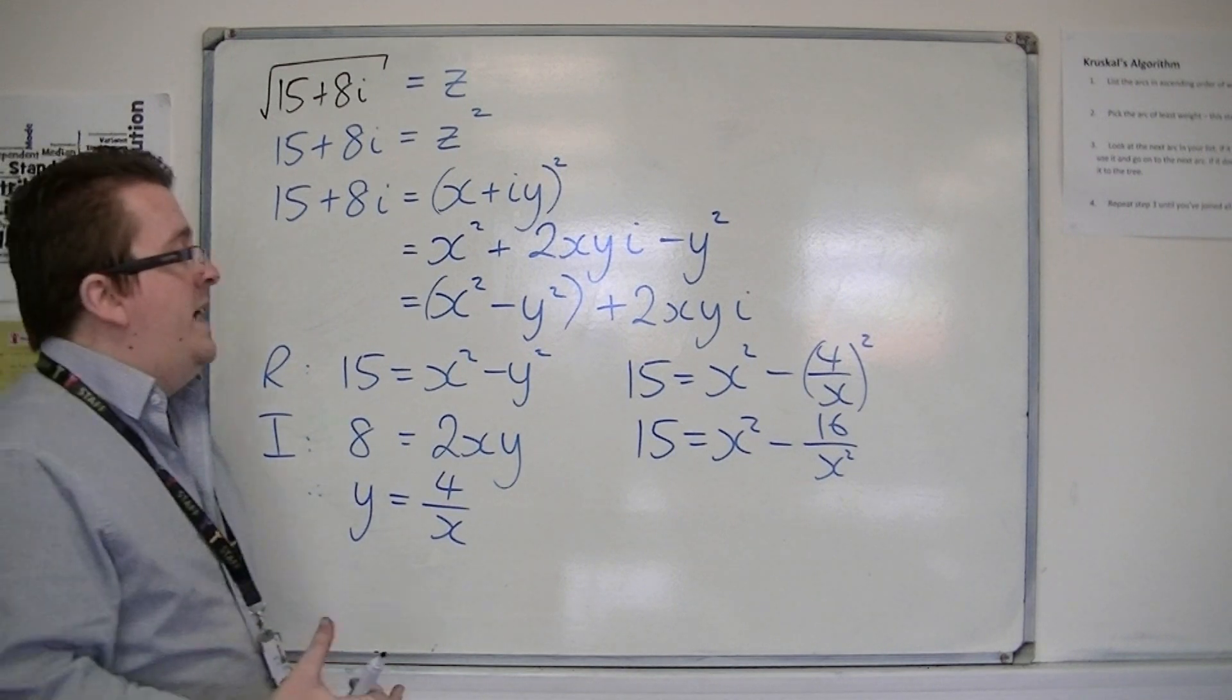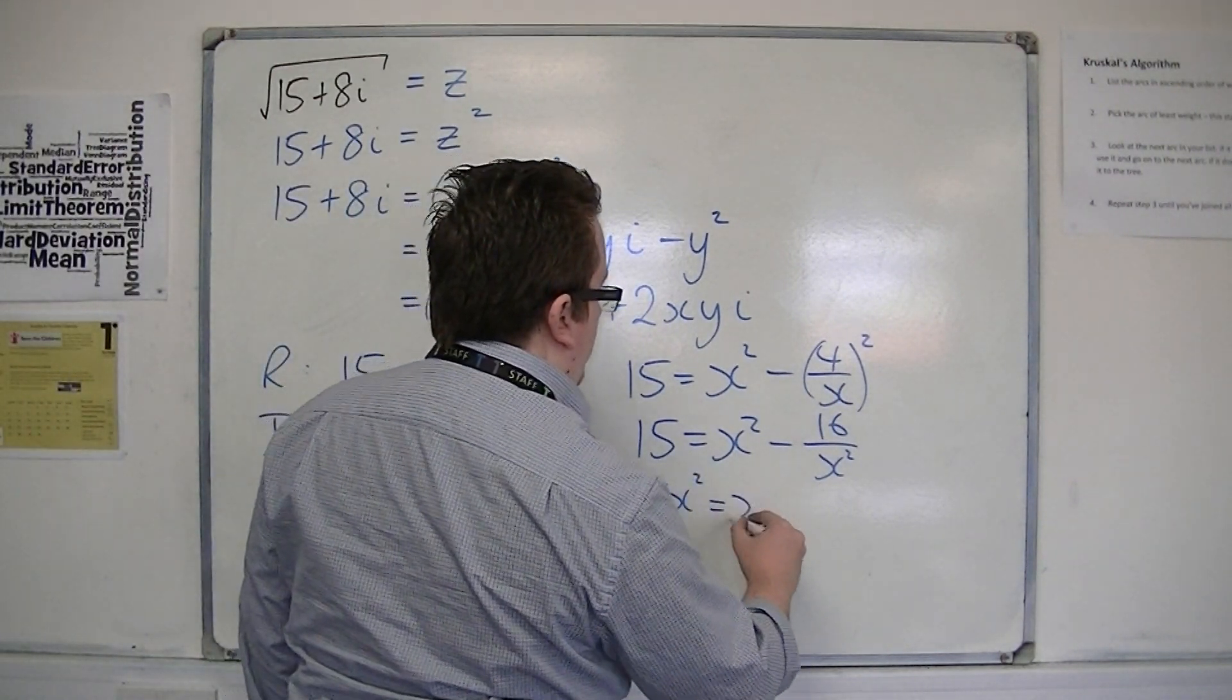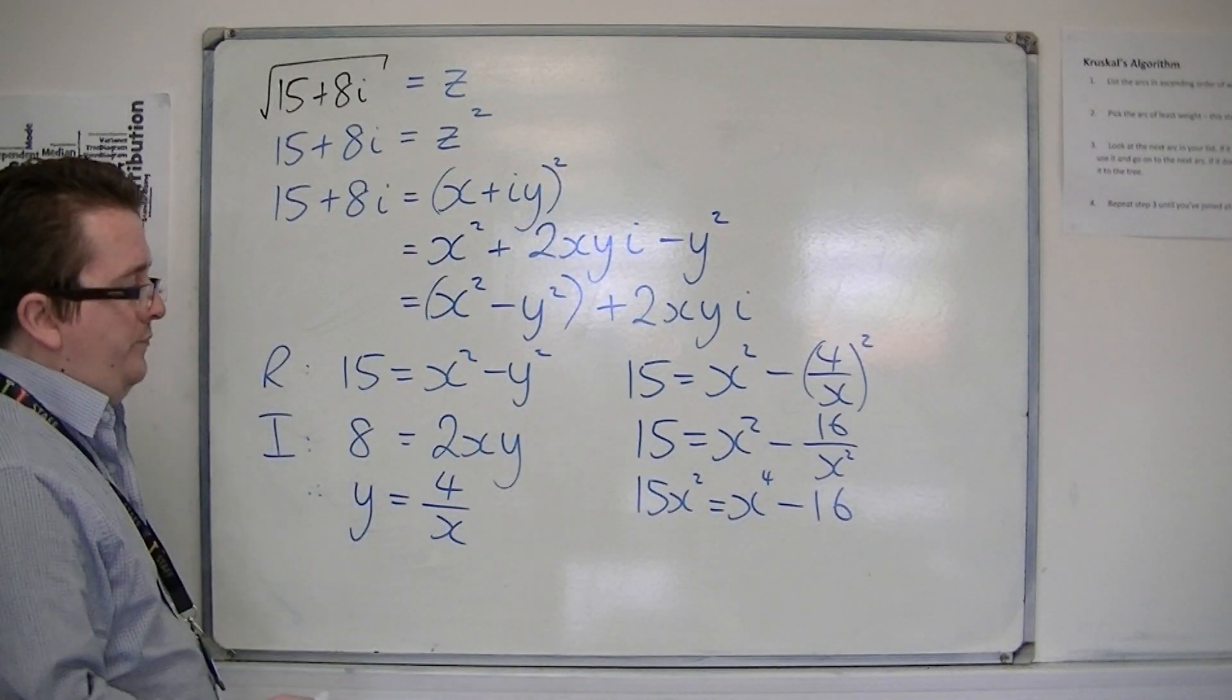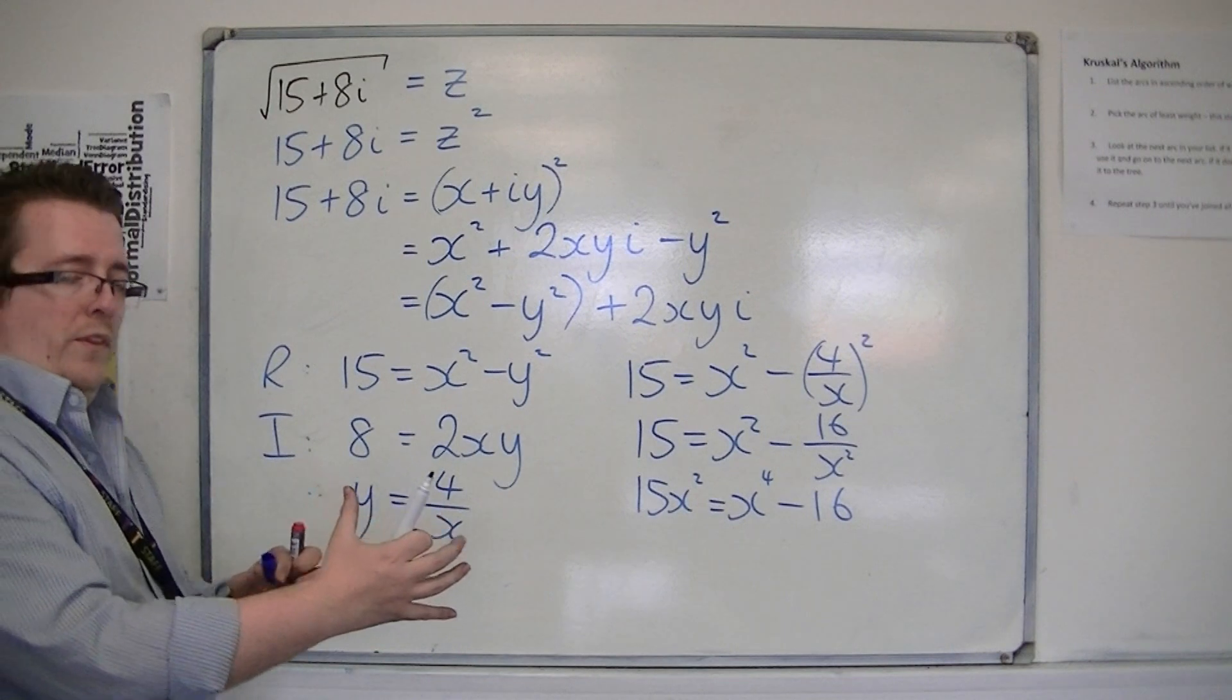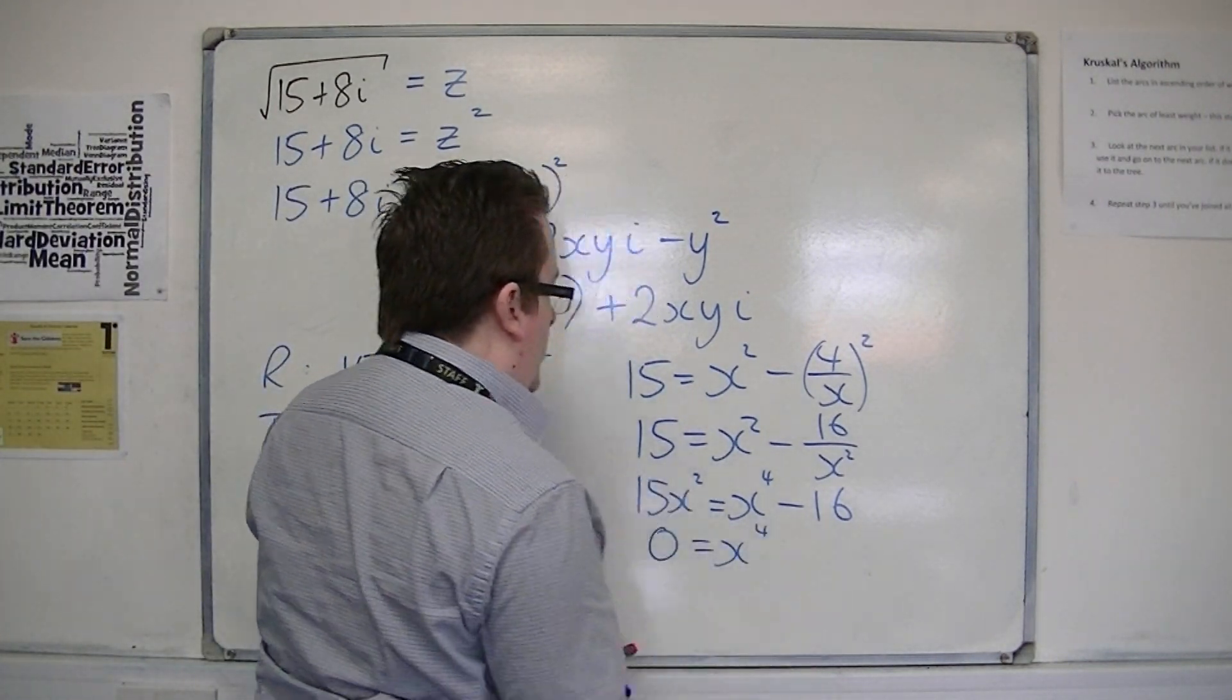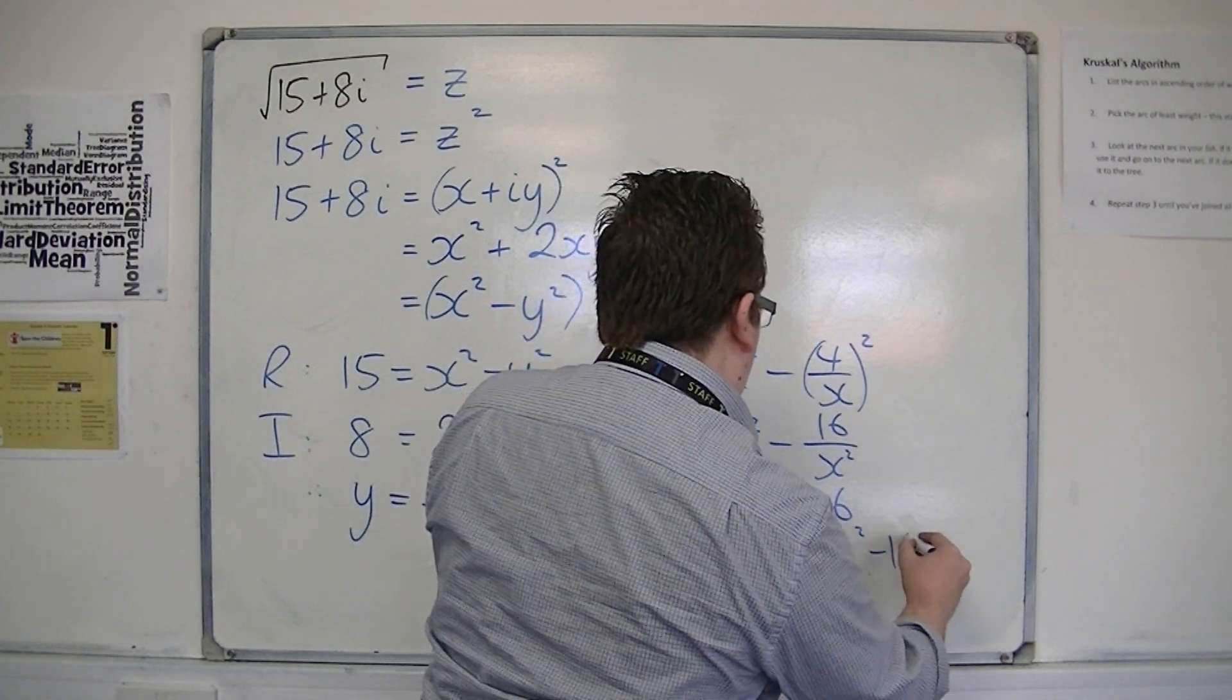If I multiply everything by x squared, I get 15x squared is equal to x to the 4 minus 16. Move everything onto one side of the equation, so 0 equals x to the 4 minus 15x squared minus 16.